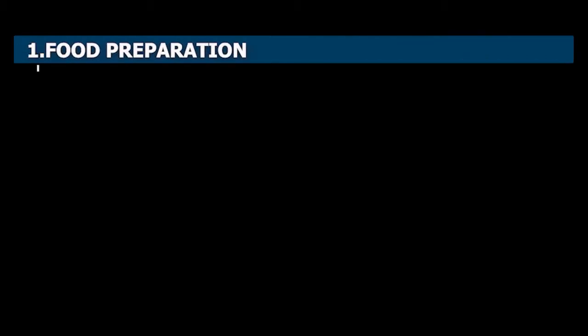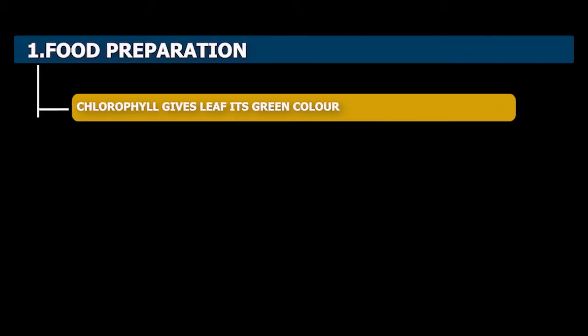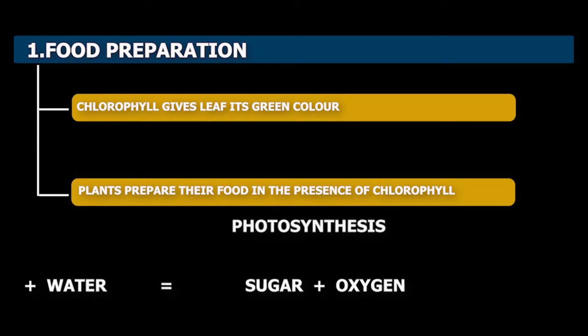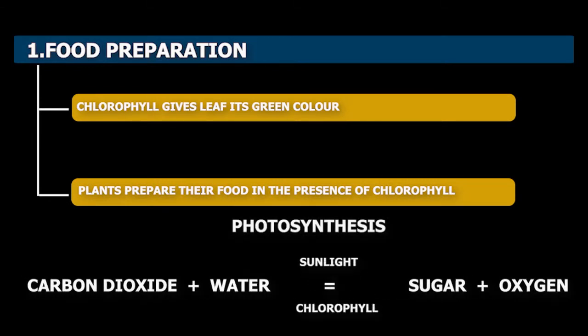1. Food Preparation. The green color of the leaf is due to the presence of green colored pigment called chlorophyll. Plants prepare their food in the presence of chlorophyll. Food preparation in plants is called photosynthesis.